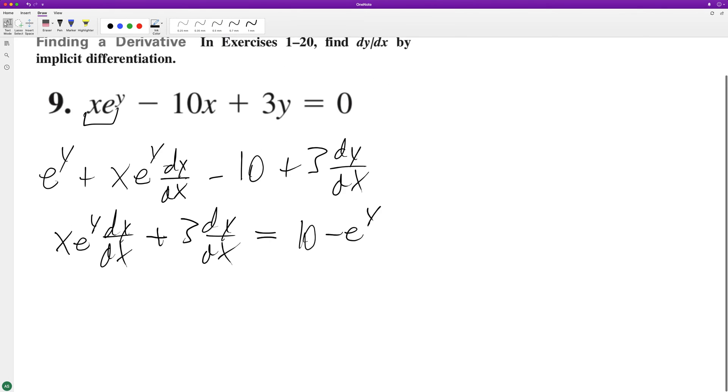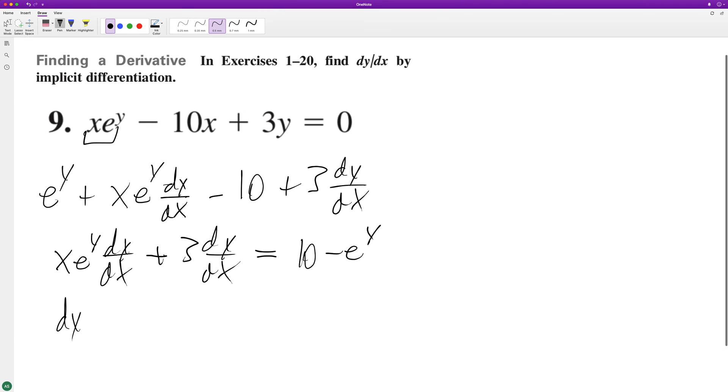Factor out the dy dx. And then divide through. So we end up with dy dx is equal to 10 minus e raised to the y, over x e raised to the y, plus 3.